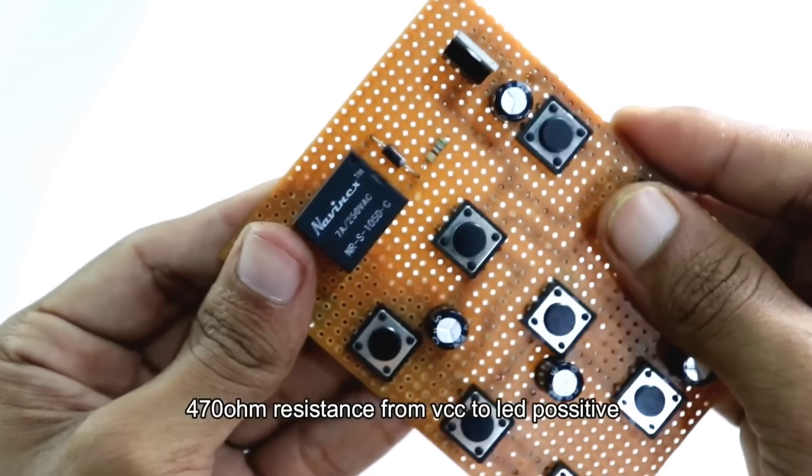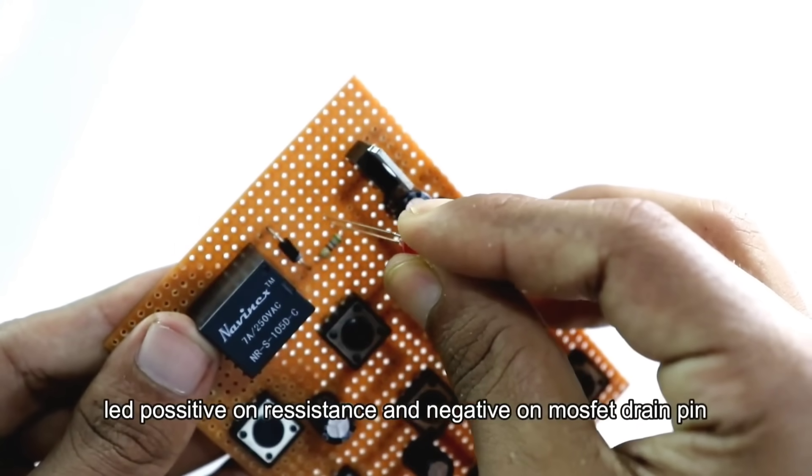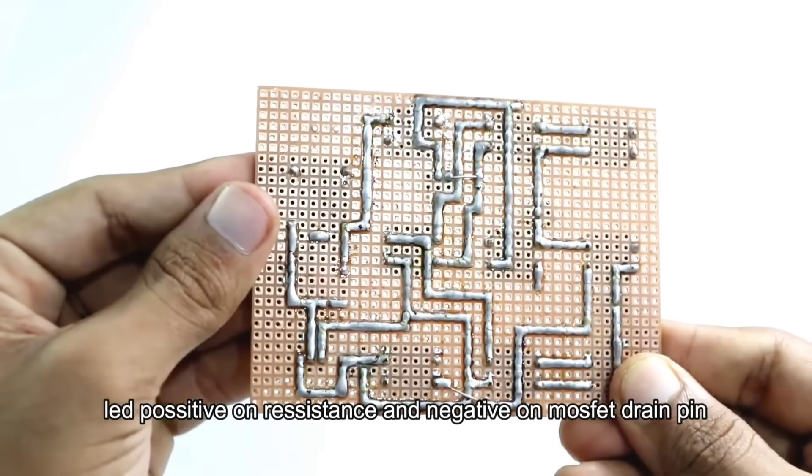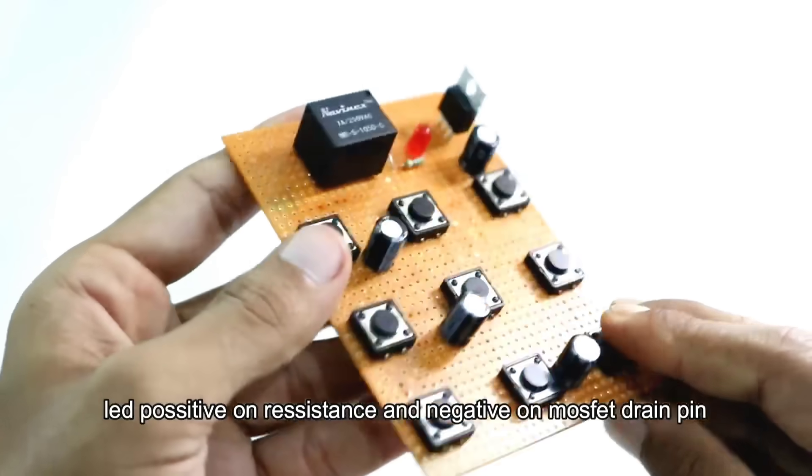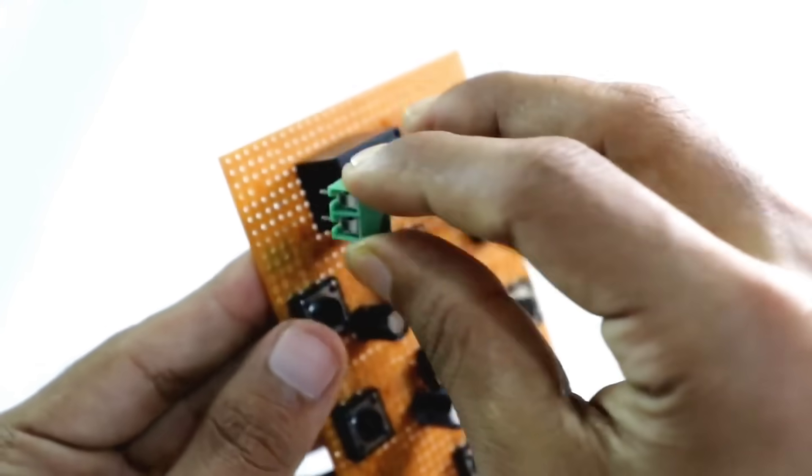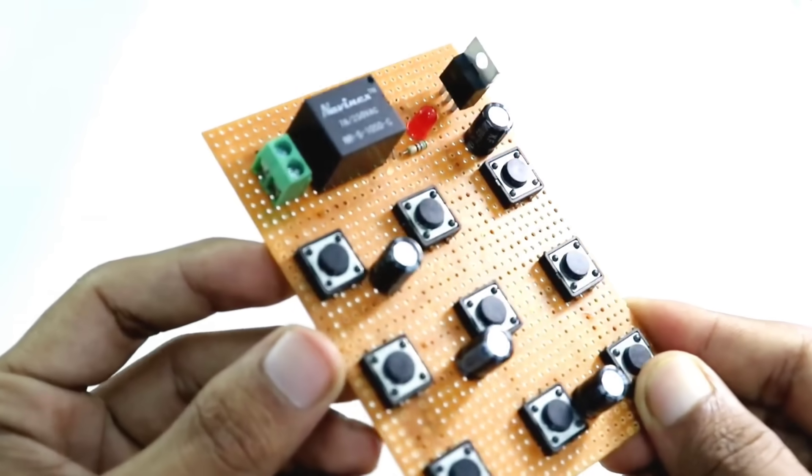LED indicator setup. We now connect an LED as a visual output indicator. This will allow the LED to light up only when the correct password is entered and the MOSFET activates. Wire mounting terminal. Now we install a wire mount connector or terminal block to make external connections neat and reliable. This is useful for connecting power supply or any external control lines securely.